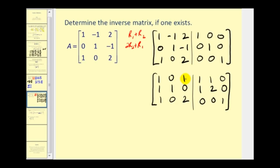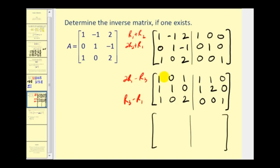To get a zero in the next position, we work with row three to preserve the zero we already have. Replace row one with two times row one minus row three: two minus one is one; zero minus zero is zero; two minus two is zero; two minus zero is two; two minus zero is two; zero minus one is negative one. Row two stays the same. For row three, replace with row three minus row one: one minus one is zero; zero minus zero is zero; two minus one is one; zero minus one is negative one; zero minus one is negative one; one minus zero is one.